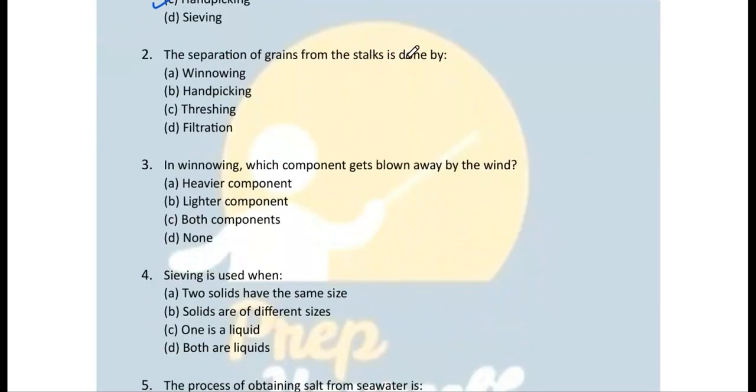Question 2: The separation of grains from the stock is done by threshing. Threshing is a process by which you can separate grains from the stalks.